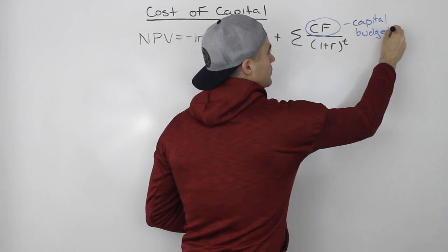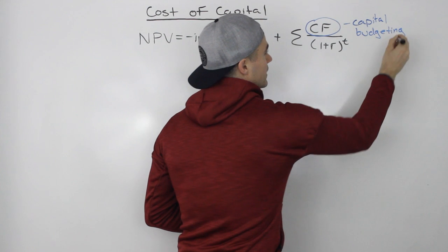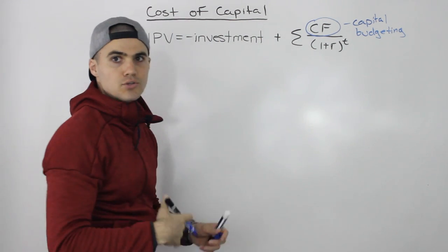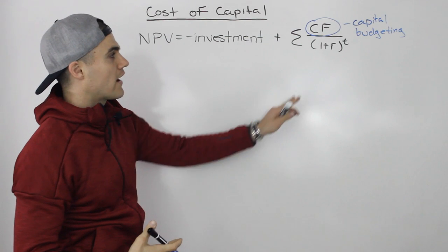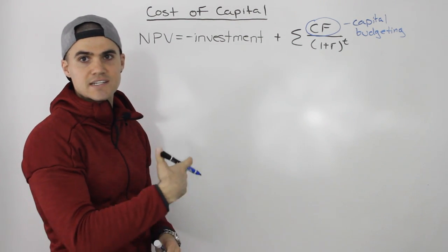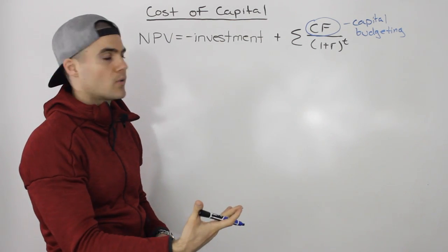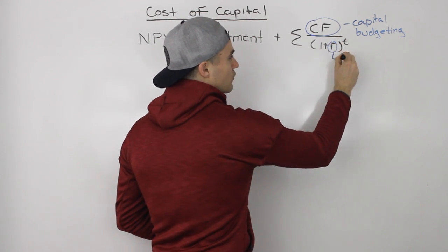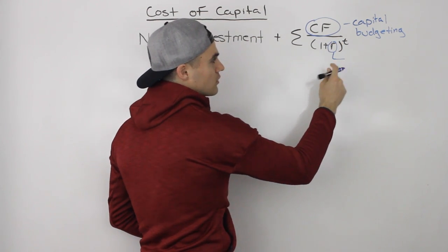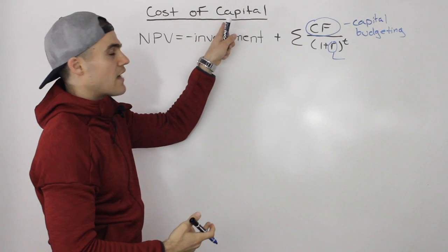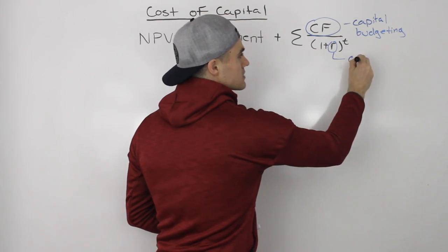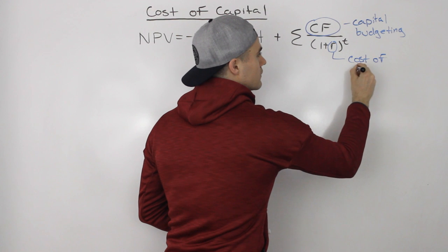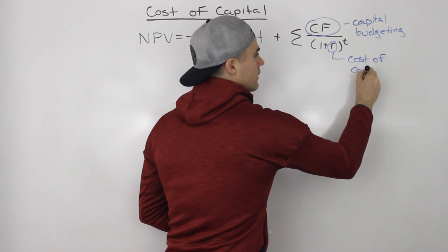Now in this chapter, what's going to happen is we're going to break down this R value — this required rate of return. Usually this R has been given to us as just a discount rate in questions, but in this chapter we're going to break it down a little further. This R, this required rate of return, is the cost of capital.